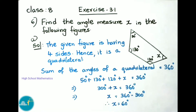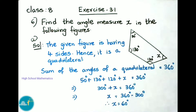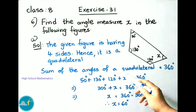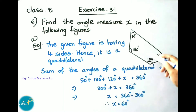See now question number 6: find the angle measure x in the following figures. Observe the given figure. This figure has four sides, hence it is a quadrilateral. The sum of the angles of a quadrilateral is 360 degrees. Here they have given three angles: 50 degrees, 130 degrees, and 120 degrees, and the fourth angle is x.